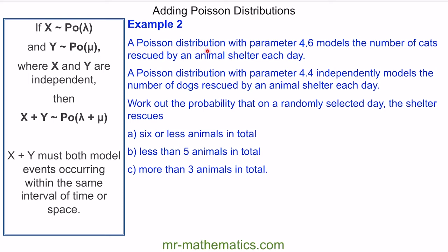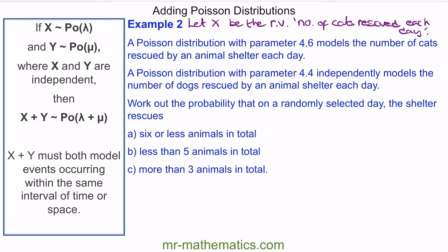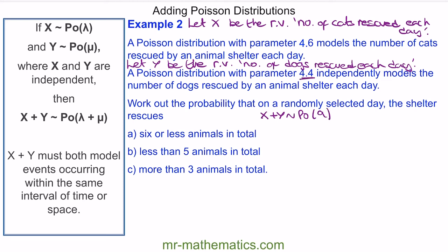For example 2, a Poisson distribution with parameter 4.6 models the number of cats rescued by an animal shelter each day, and a Poisson distribution with parameter 4.4, independently — and this is important — models the number of dogs rescued each day. Because they are independent, we can use our property. Let x be the number of cats rescued each day and y be the number of dogs rescued each day. Then x plus y is distributed as a Poisson with parameter 9, from adding the two parameters together.